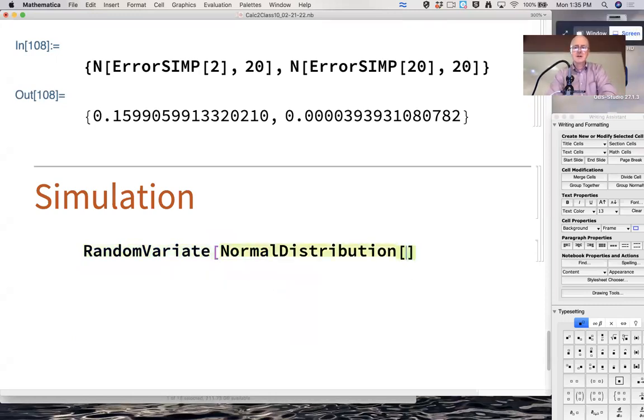Normal distribution centered at zero. That's its mean, and with something called a standard deviation of one. And we'll look at 100 simulated data values.